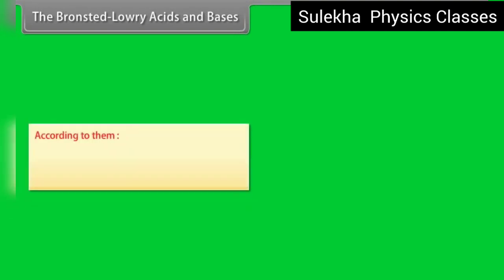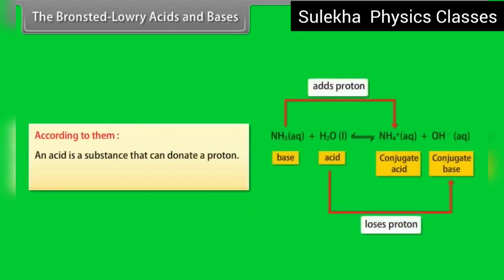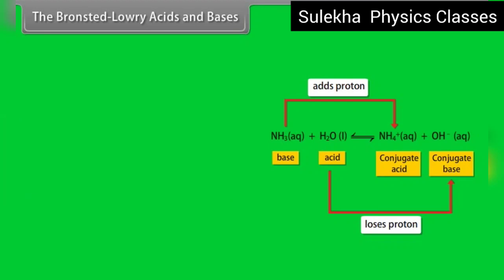According to Bronsted and Lowry, an acid is a substance that can donate a proton. A base is a substance that can accept a proton.